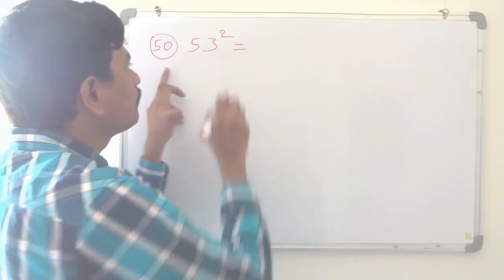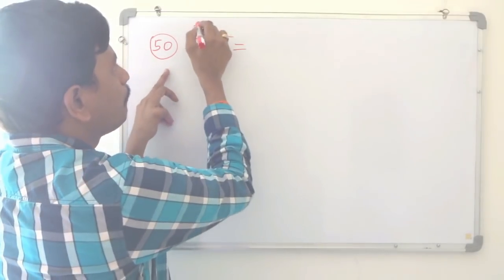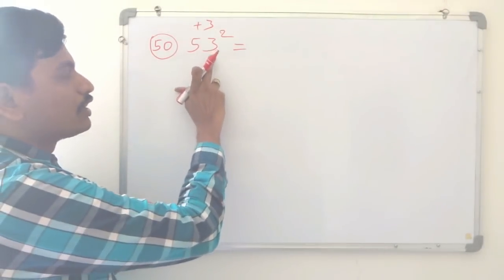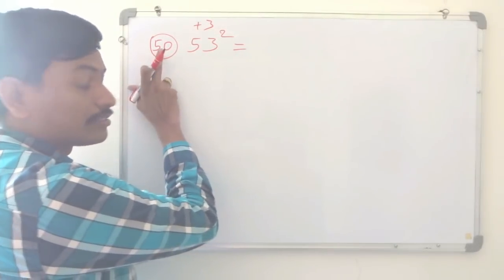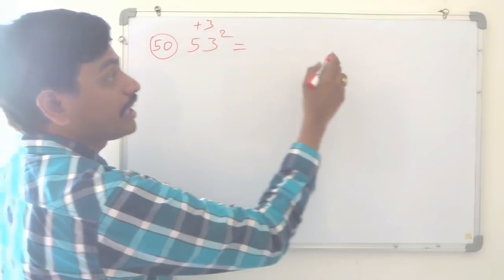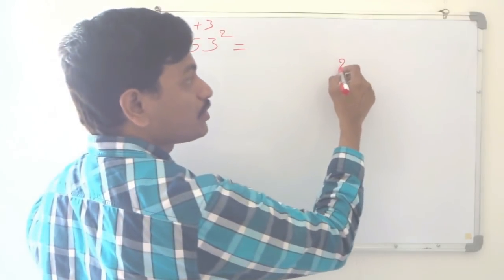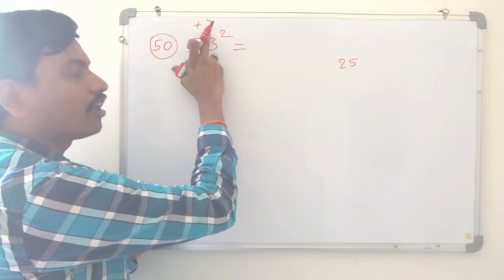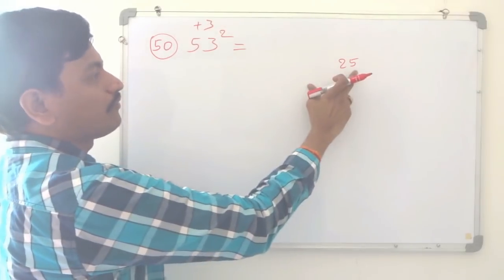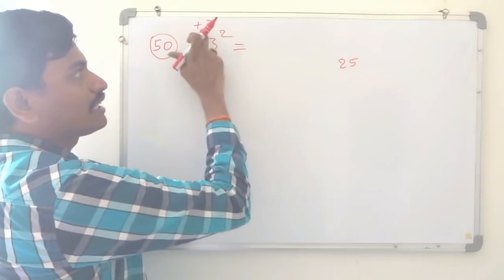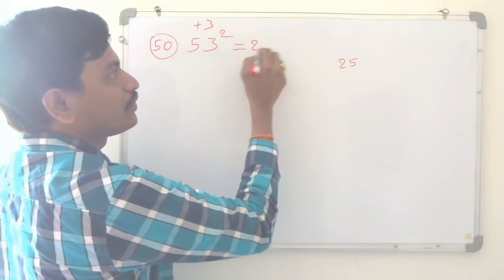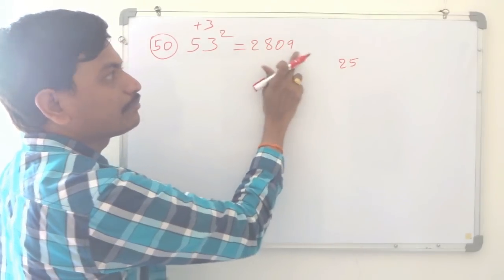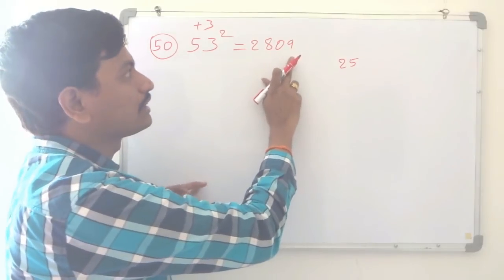53 is how much bigger than 50? Plus 3. For numbers nearer to 50, we always start with 25 and add or subtract. So 25 plus 3 is 28, and 3 squared is 9. We write 09 because we need 2 digits. So 53 squared is 2809.